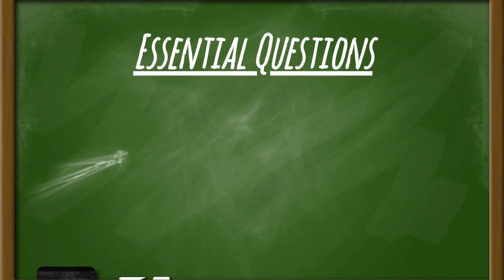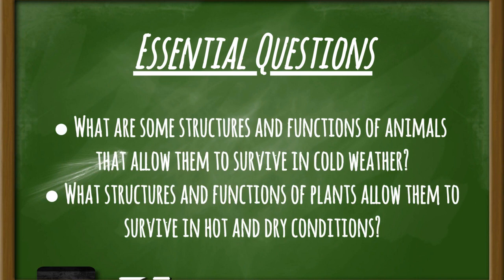The two essential questions we have been dealing with for the adaptation lessons are listed on the board. They say: what are some structures and functions of animals that allow them to survive in cold weather, and what structures and functions of plants allow them to survive in hot and dry conditions? We have been practicing this whole week learning about different animals' physical characteristics, as well as plants and their characteristics, their needs and nutrients, and how they survive. We've also talked about how different plants and animals in different environments look different because they have adapted to their environments.